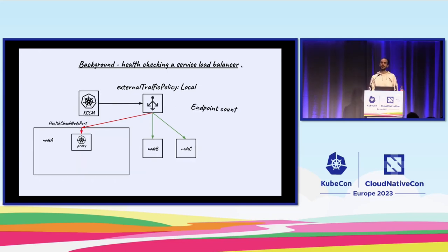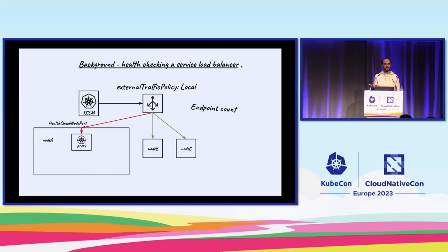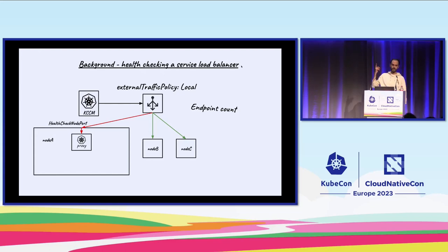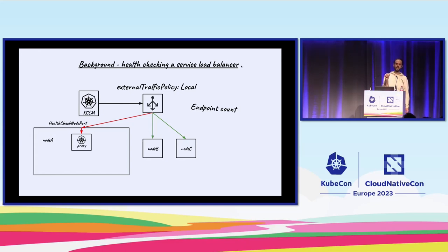For external traffic policy local, we don't want to use an additional next hop — we want the load balancer to send traffic directly to the node hosting the pod. For that to work, the service proxy watches services and endpoints and counts the number of endpoints on each individual node. In this example, there's no pod running on Node A, so the service proxy fails the health check. The port targeted by the load balancer is the health check node port field on the service object, which can be set manually or auto-provisioned by the control plane.